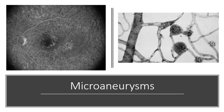The signs include tiny little red dots, initially temporal to the fovea, which are the earliest signs of diabetic retinopathy. They are hard to see when looking at the fundus and are actually more obvious during fundus fluorescein angiography. You can see in this FFA image these tiny little specks, which are microaneurysms.